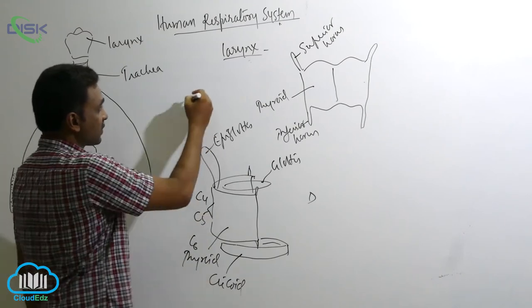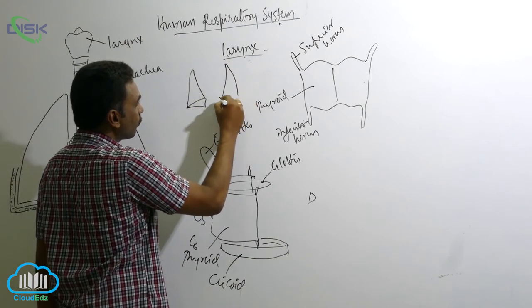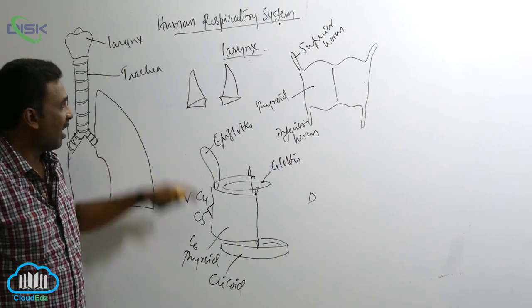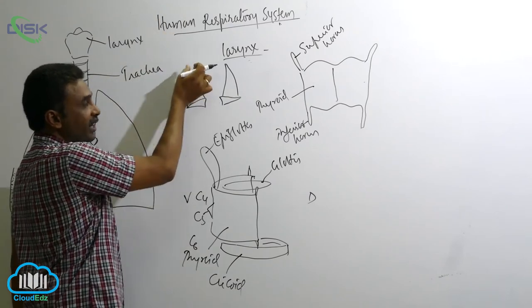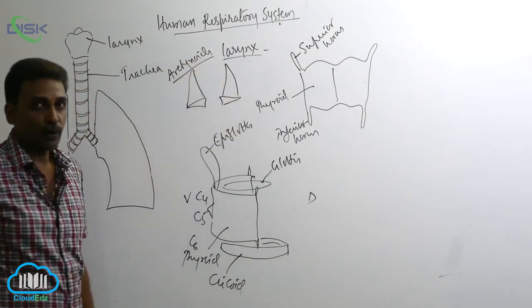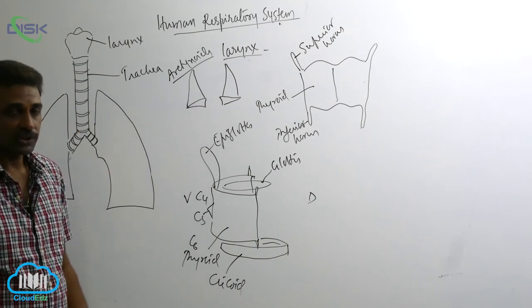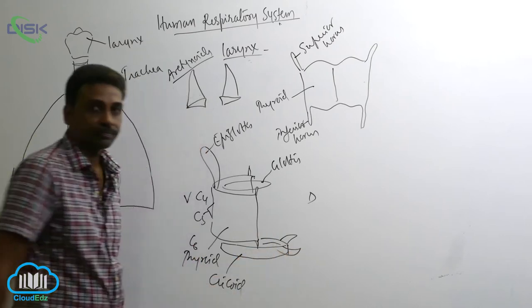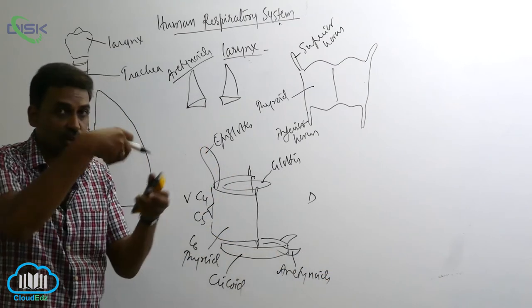Attached to the cricoid, we have a pair of cartilages that are triangular or pyramidal in shape and small in size. The base is made up of hyaline cartilage and the tip is made up of elastic cartilage. They have a broad base and a pointed apex. These are called arytenoids. They are pyramidal in structure with three sides, and their broad base is attached to the cricoid cartilage.